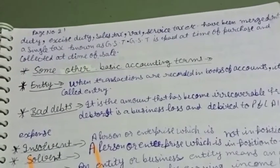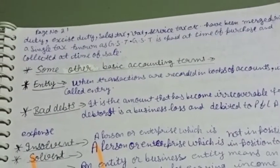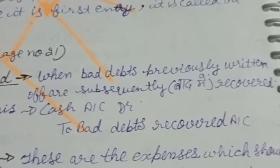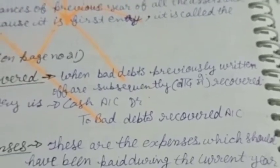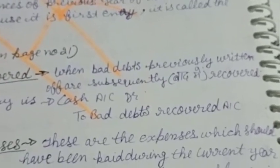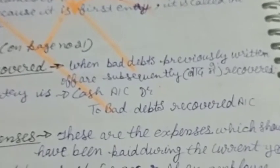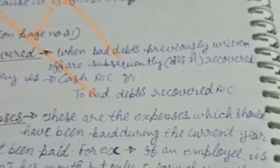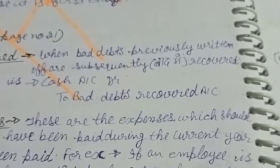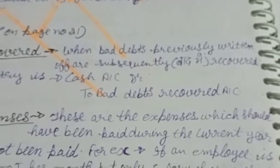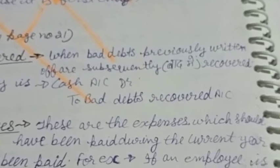Now we talk about bad debts recovered. When bad debts that were previously written off are subsequently recovered, the entry will be: Cash Account debit, to Bad Debts Recovered Account. When bad debts occur they are debited as a loss or expense, and when recovered, Bad Debts Recovered Account becomes credit and Cash Account is debited.